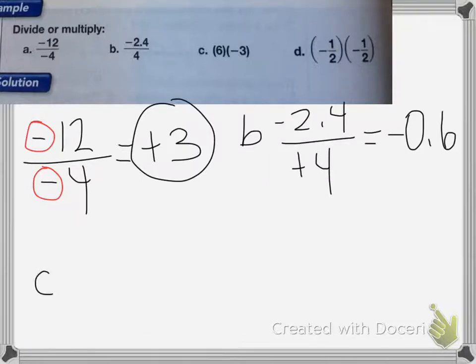With C, I have 6 times negative 3. Since the symbols are opposite - I have a negative and a positive - that means the answer is going to be negative. So it equals negative 18.